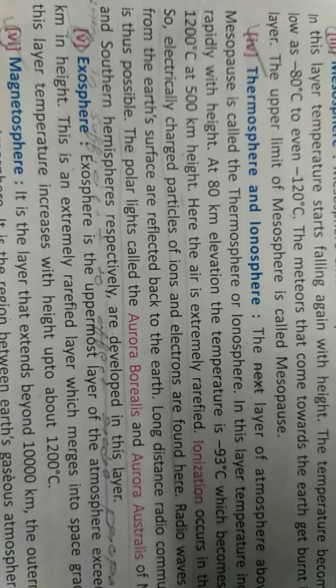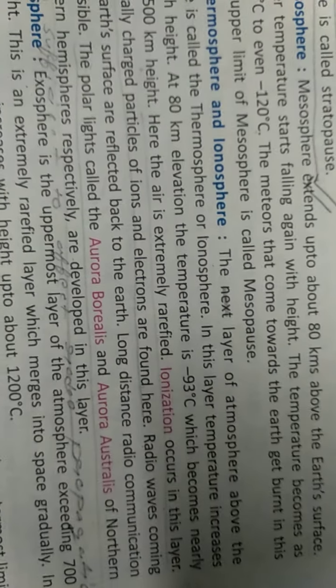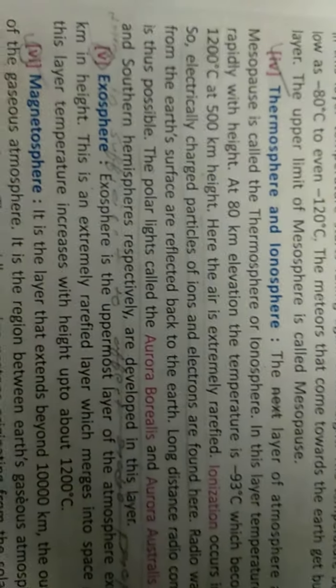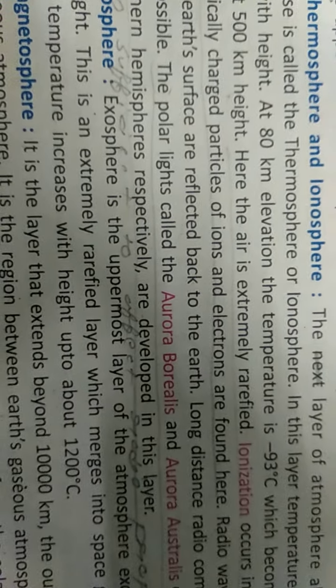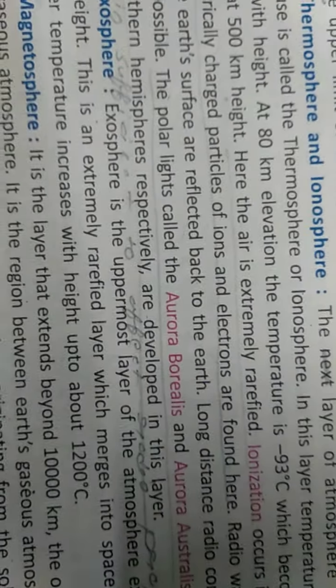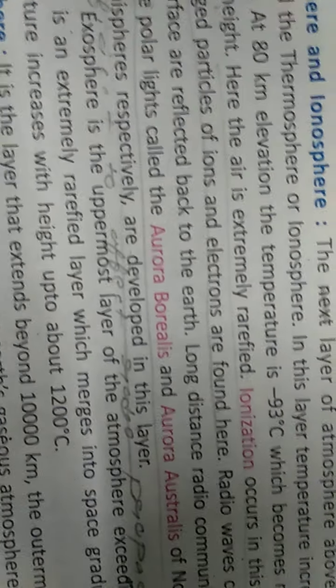Radio waves — due to which we can receive TV and radio signals — reflect back to the Earth due to this ionosphere or thermosphere. Long distance radio communication is possible due to this sphere. The polar lights, which you have read about — that is the Aurora Borealis and Aurora Australis in the northern and southern hemispheres — are also produced in this layer.